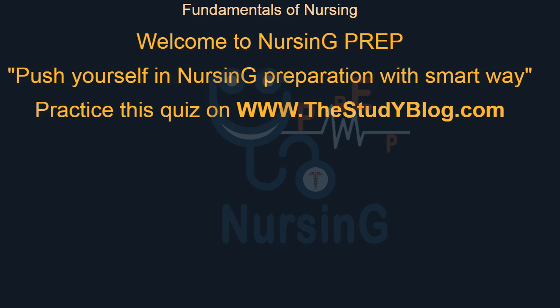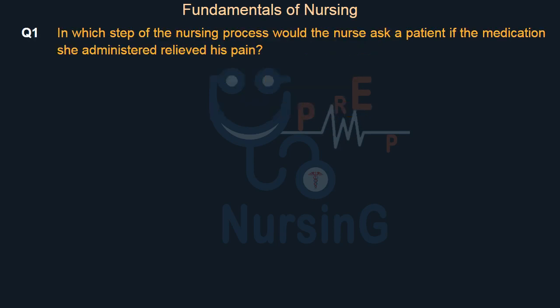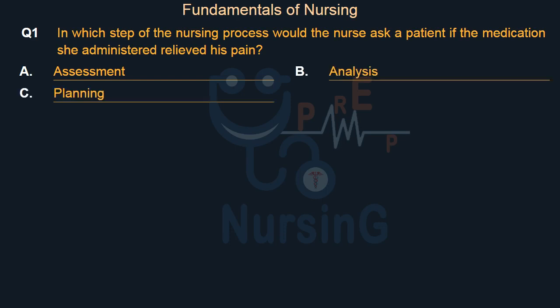Fundamentals of Nursing. In which step of the nursing process would the nurse ask a patient if the medication she administered relieved his pain? Option A: Assessment. Option B: Analysis. Option C: Planning. Option D: Evaluation.